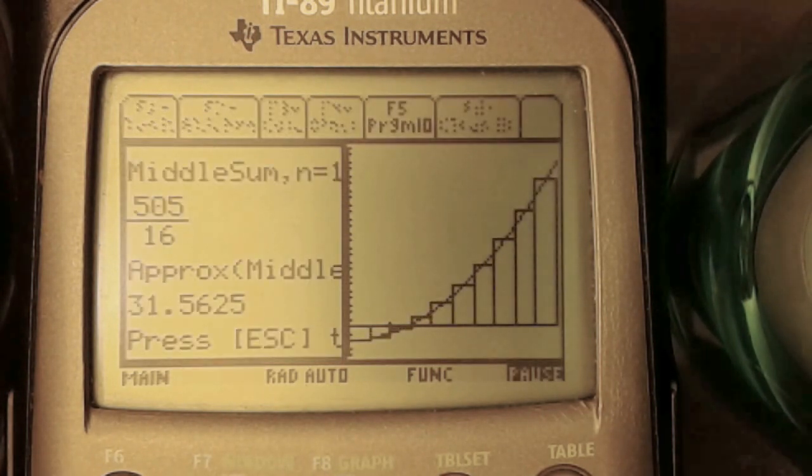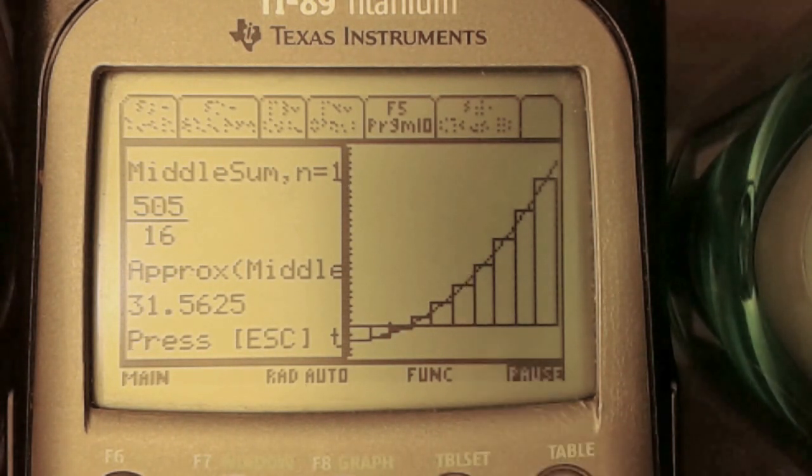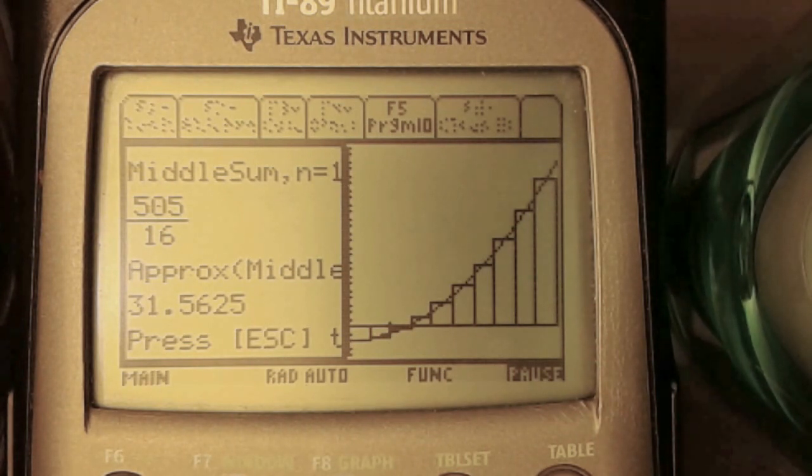This time we get an approximation of 31.5625, which is in between the left sum and the right sum. This is because the rectangles are in the middle of the partitions, which gives a more accurate approximation.